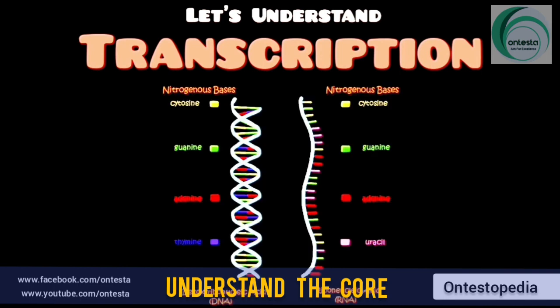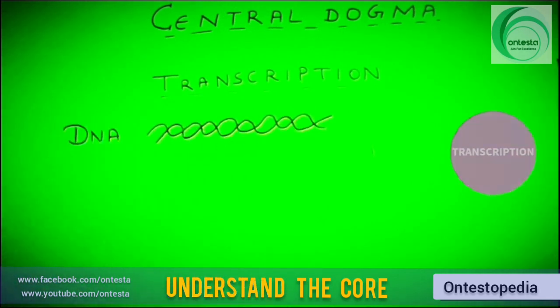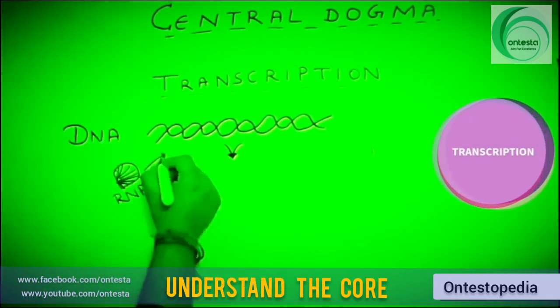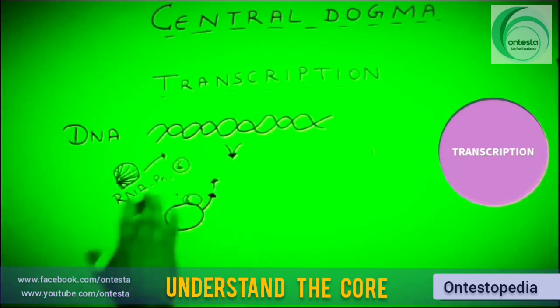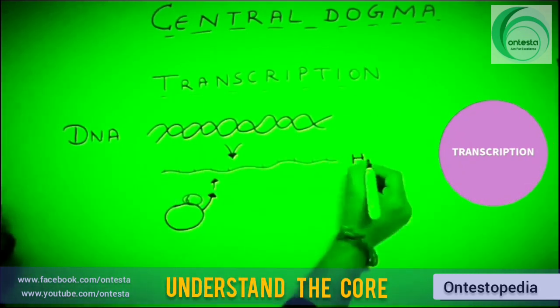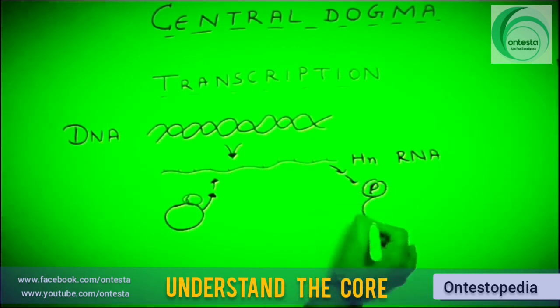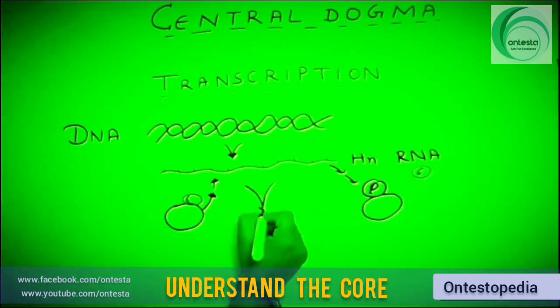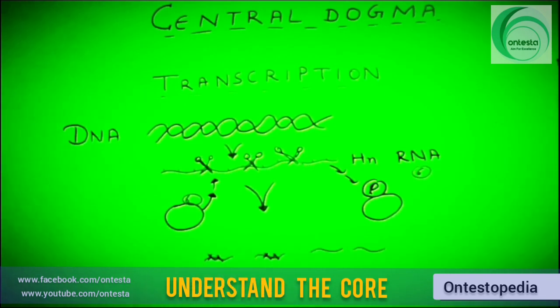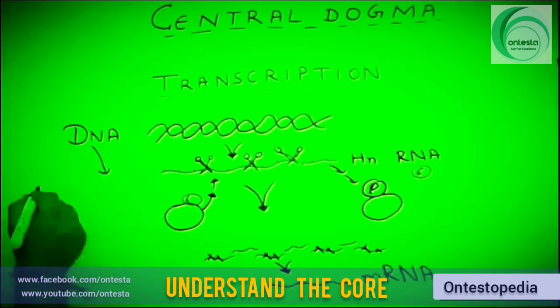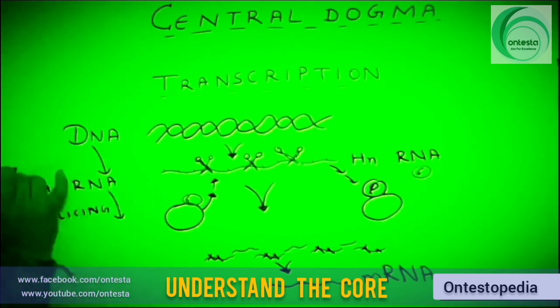Now let's understand transcription, or synthesis of RNA. Transcription requires DNA to copy information to form an RNA strand. A sigma protein factor and RNA polymerase initiate the process, while rho factor stops it. Initially, heterogeneous RNA is formed, which is converted into messenger RNA by removing introns from it. The process of removal of these intervening sequences or introns is called splicing.